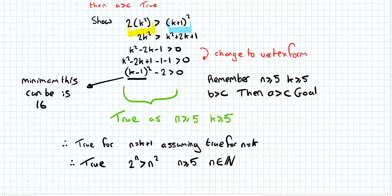End of the question: true for n equals k plus 1, assuming true for n equals k. We also confirmed true for n equals 5, which was step 1. We can now say that the initial statement is true as long as n is greater than or equal to 5 and n is an element of the natural numbers.